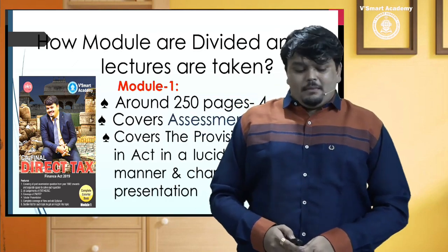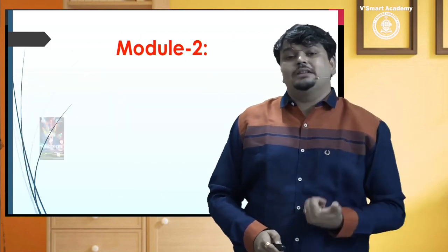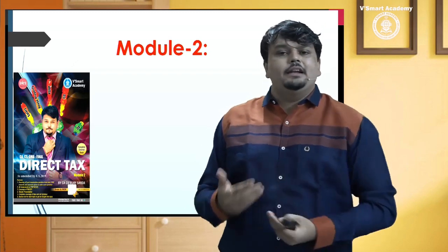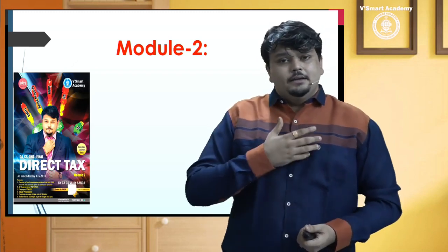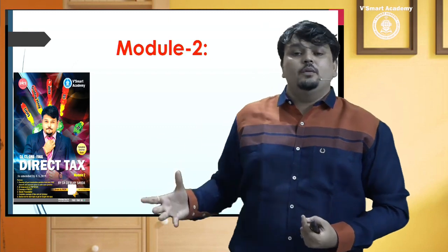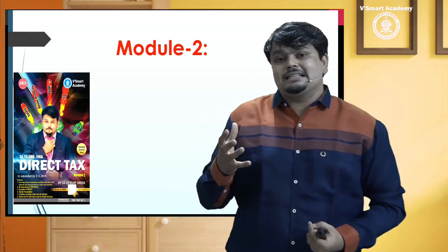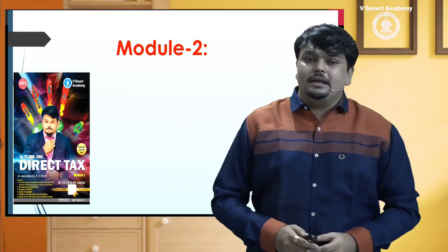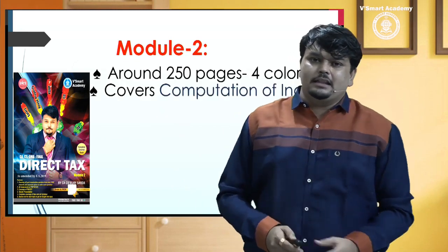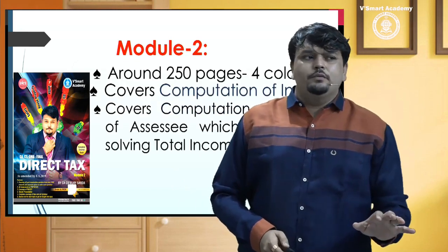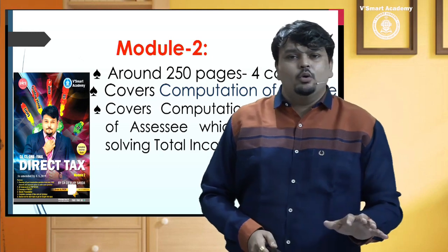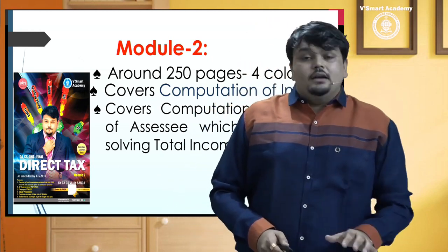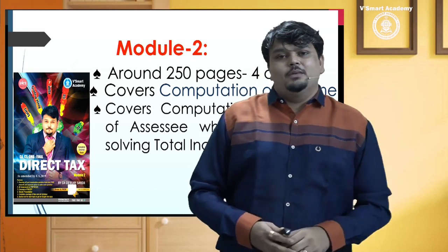Module 2 ki agar main baat karoon, toh Module 2 hamaara hota hai computation of income — like PGBP, capital gain, deductions, set off, clubbing — saare topics, including advance tax and penalties related thereto, woh saare ke saare is module ke andar mein cover kiye jaate hain. Again, around 200 to 250 pages ka hota hai, multi-color book hota hai, jo vSmart ka hamesha se policy raha hai. Aur yahaan aapko computation seekhne ko milta hai.